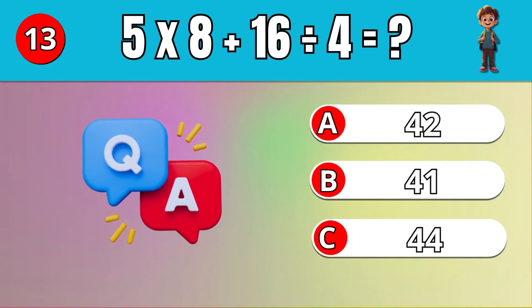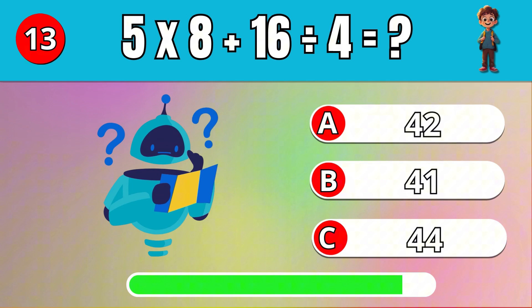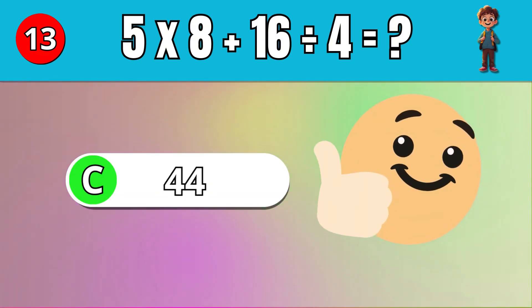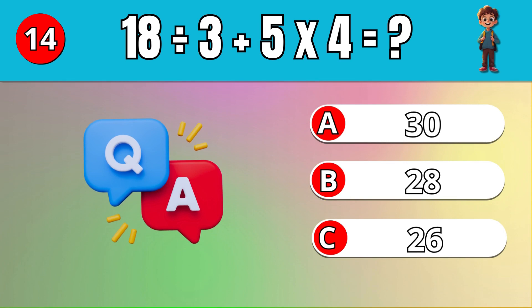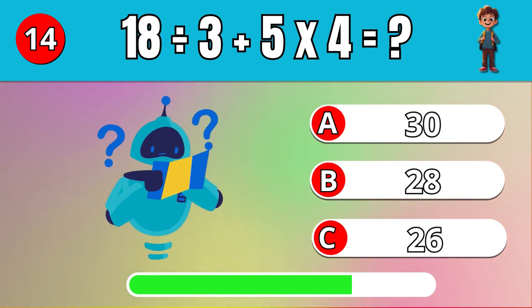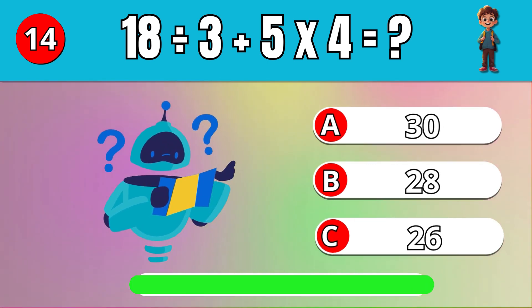What is 5 times 8 plus 16 divided by 4? C, 44. What is 18 divided by 3 plus 5 times 4? C, 26.